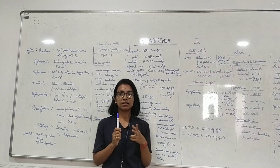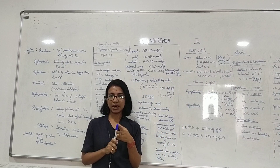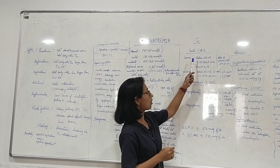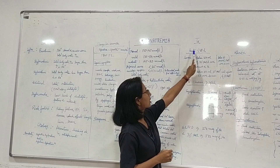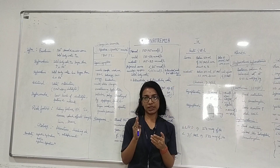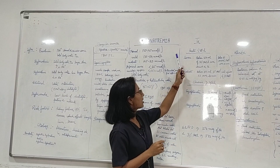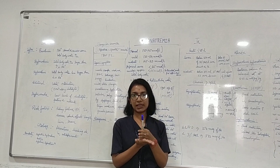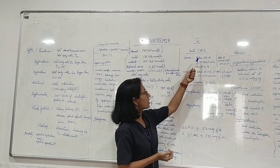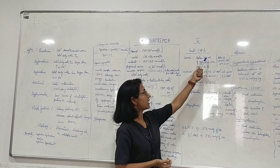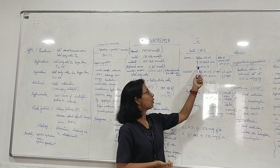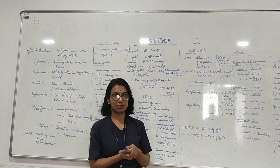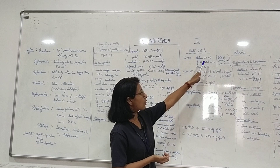For treatment, I will explain based on two guidelines — American and European. According to the European guideline, if hyponatremia is acute (less than 48 hours) and symptoms are severe, give a bolus of 150 ml of three percent sodium chloride over 20 minutes, repeated three times, with continuous monitoring of sodium concentration.